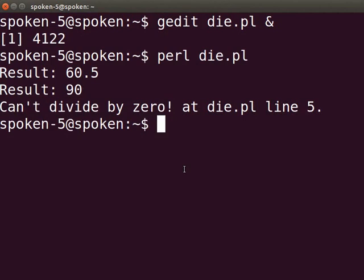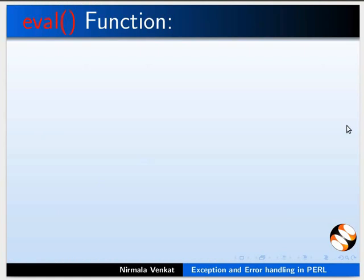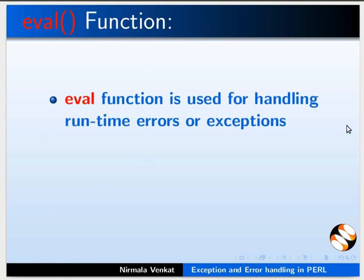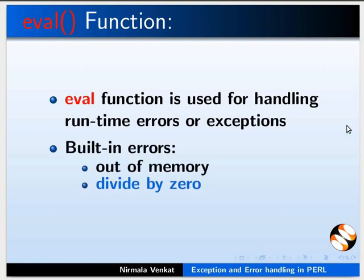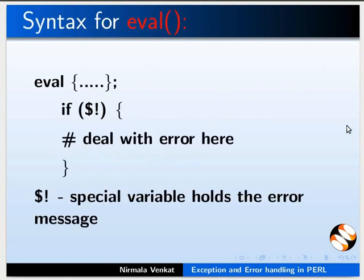Next we will see how to use the eval function in error handling. The eval function is used for handling runtime errors or exceptions, for example built-in errors such as out of memory, divide by zero, or user-defined errors. The general syntax for the eval function is shown here. The $! special variable holds an error message if any; otherwise $! holds an empty string, meaning it is evaluated as false.